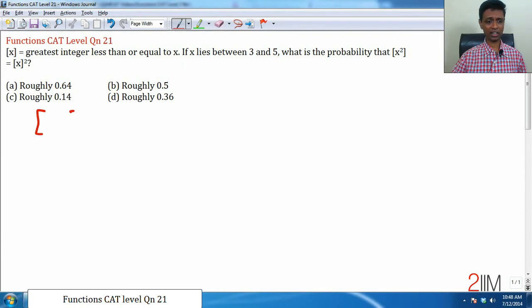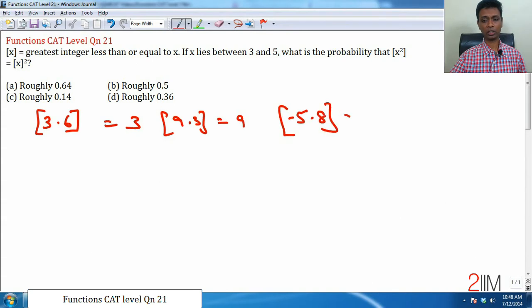First, let us wind our head around this symbol. Simply, greatest integer of 3.6 is 3, greatest integer of 9.3 is 9, greatest integer of minus 5.8 is minus 6. We look for numbers equal to that number or lesser. The first integer we hit, that is the answer and very simple.